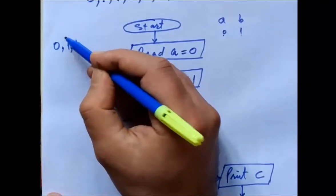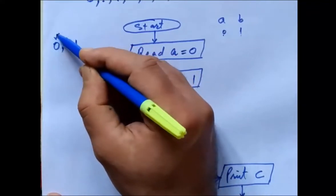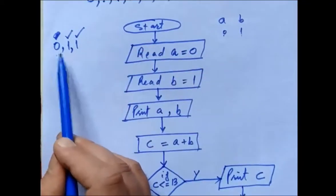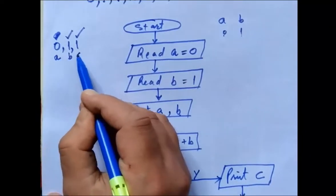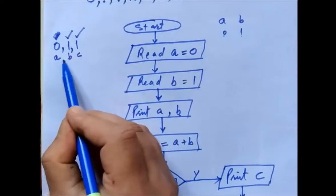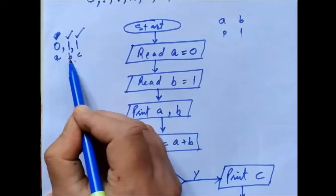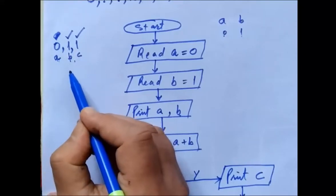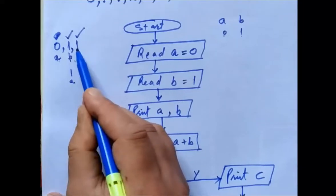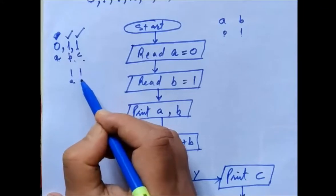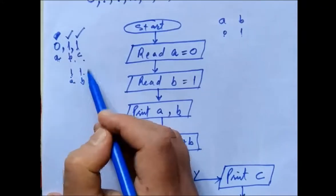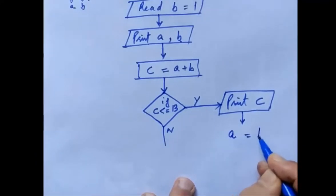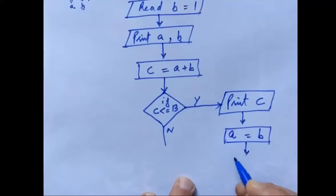After printing c, I have to replace the values of a and b. Initially a was 0, b was 1, and c was the new value. So a will be equal to b — a gets replaced by the value of b. Then b will be equal to c — b gets the value held by c. So initially it was 0, 1; now it is 1, 1. I have written: a equals b, then b equals c.